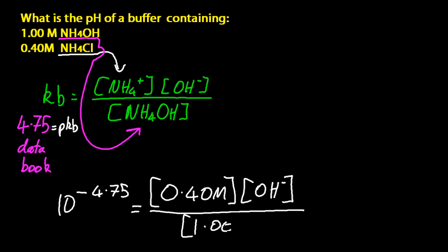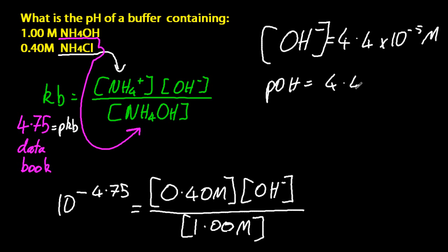Have you spotted the teeny tiny trick that I've tried to play on you? OH- concentration, well, that's just straightforward algebra. And pOH, yeah, but I've asked for pH. So don't forget, take that off of 14. That gives you 9.6 for pH. Not that much of a trick.